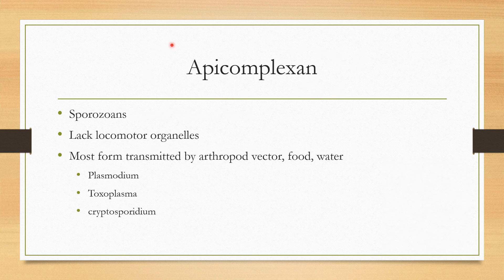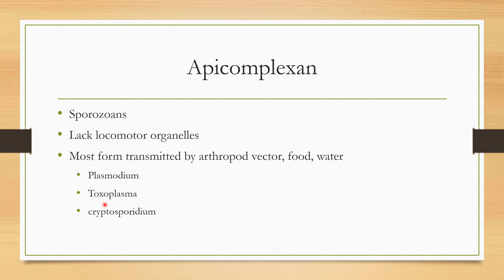The last type of protozoa discussed is sporozoa, which moves by spores rather than flagella, cilia, or pseudopods. They are called Apicomplexa because of their complex life cycle. There are no locomotor organs. The most common is Plasmodium, which causes malaria. Toxoplasma comes from cats and can affect the fetus in pregnant women. Cryptosporidium will not be covered in detail.